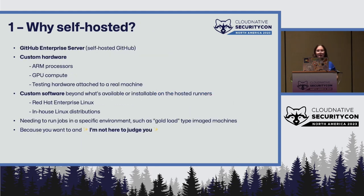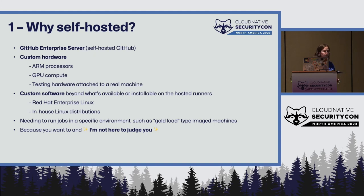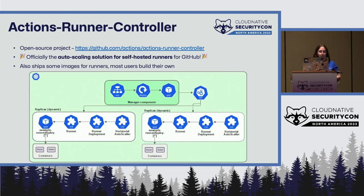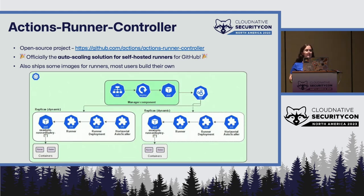Not everyone has the option of just using SaaS. Common reasons for self-hosted runners include GitHub Enterprise Server — if you self-host GitHub, you're self-hosting all the compute around it too. Others want custom hardware, custom software, or simply want to. So we need a controller — this is where Actions Runner Controller comes in. It's an open source project that started as Summerwind's action runner controller, moved to its own organization, and is now officially the auto-scaling solution for self-hosted runners within GitHub. It does ship some images for runners, but most users build their own.